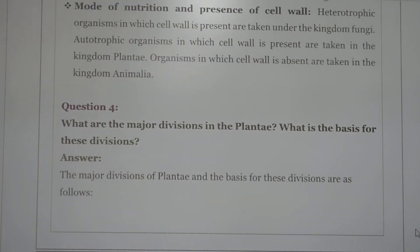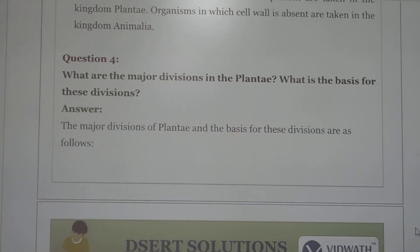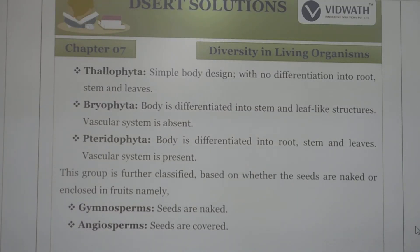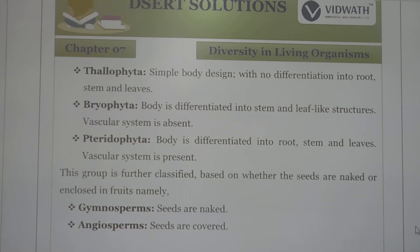Next question: what are the major divisions in the plant kingdom and what is the basis for these divisions? The major divisions are Thallophyta, Bryophyta, Pteridophyta, Gymnosperms, and Angiosperms. Thallophyta has a simple body design with no differentiation into root, stem, and leaves. Bryophyta has differentiation into stem- and leaf-like structures but no vascular system. In Pteridophyta, the body is differentiated into root, stem, and leaves and a vascular system is present. This group is further classified as gymnosperms — where seeds are naked — and angiosperms — where seeds are enclosed in fruit.